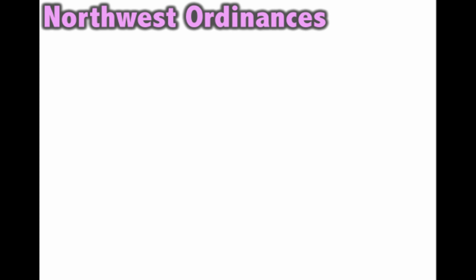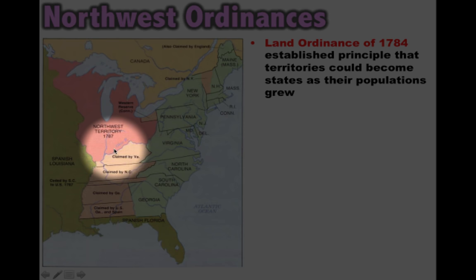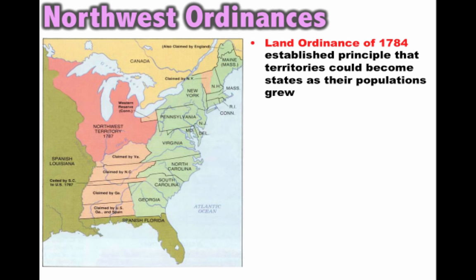In spite of these challenges, there are some things the Articles do well, and that's really seen in the Northwest Ordinances — one of the biggest accomplishments of the Articles of Confederation. The first one is the Land Ordinance of 1784, which established the principle that territories could become states as their populations grew. We're really talking about the territory of the Old Northwest, and the US government under the Articles would sell the land in order to raise money and pay off the debt.